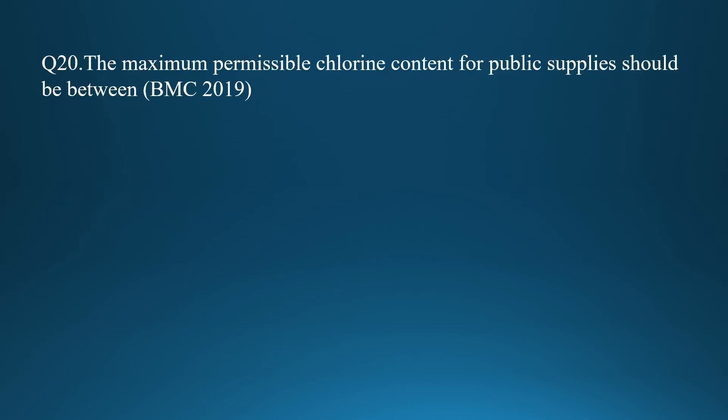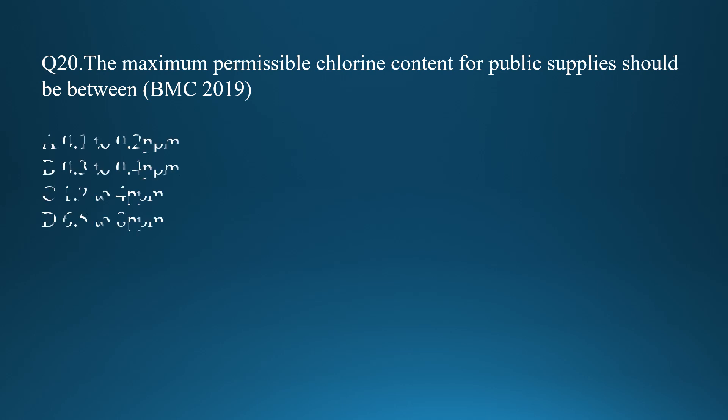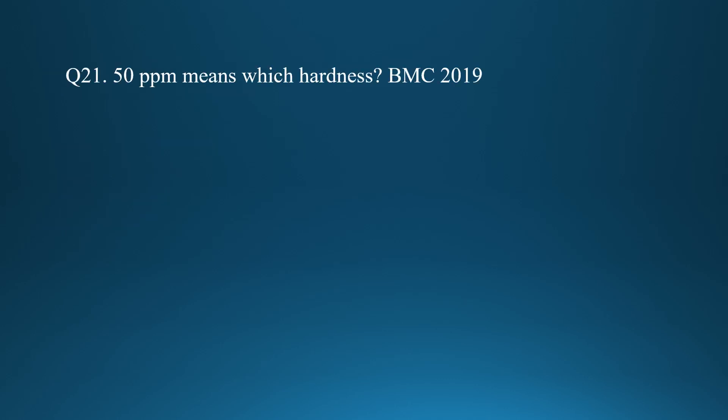Question nineteen: the maximum permissible chlorine content for public supplies should be between 0.1 to 0.2 ppm (parts per million). Question twenty: 50 ppm refers to a particular level of water hardness — the chart lists ranges for classification.